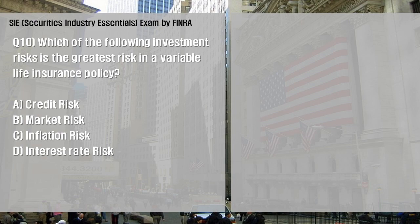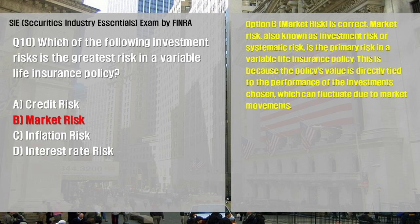Which of the following investment risks is the greatest risk in a variable life insurance policy? A: Credit Risk; B: Market Risk; C: Inflation Risk; D: Interest Rate Risk. Option B, Market Risk, is correct. Market risk, also known as investment risk or systematic risk, is the primary risk in a variable life insurance policy, because the policy's value is directly tied to the performance of the investments chosen, which can fluctuate due to market movements.